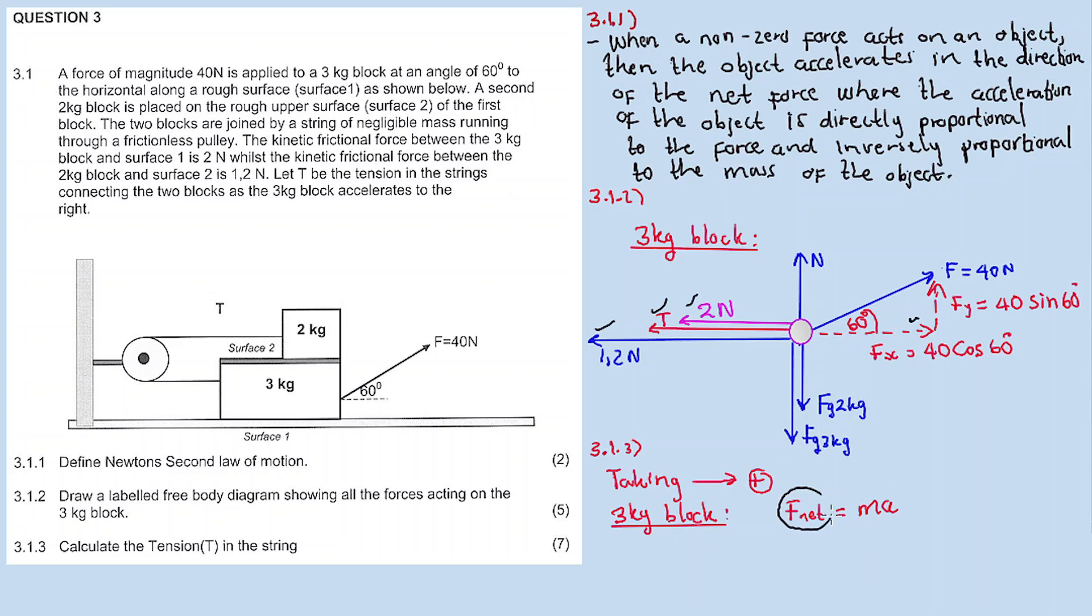Fx is the horizontal component for the applied force. The vertical forces are canceling each other out. F net equals mass times acceleration. We calculate the net force by adding all the forces in the horizontal plane. It's minus 1.2, negative because it's pointing to the left. Minus T, as T is also pointing to the left. Minus 2 plus Fx, where Fx equals 40 cos 60 degrees, equals 3 times acceleration. The acceleration is positive because the 3kg block is accelerating to the right.